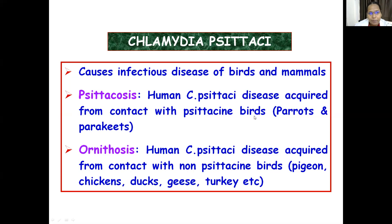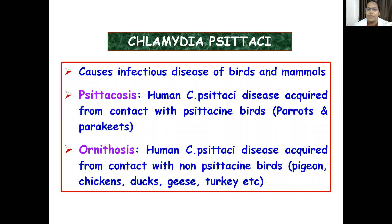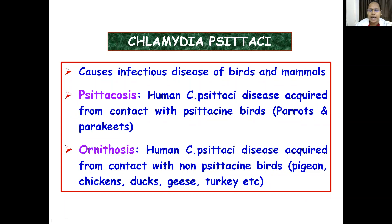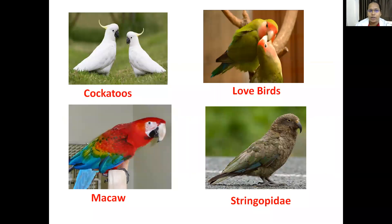In the group of psittacine birds we have parrots, cockatoos, lovebirds, macaws, and also a New Zealand parrot called Strigopidae, all responsible for transmission of psittacosis. To define ornithosis: it is the human Chlamydia psittaci disease acquired from contact with non-psittacine birds — pigeons, chickens, ducks, geese, and turkey.